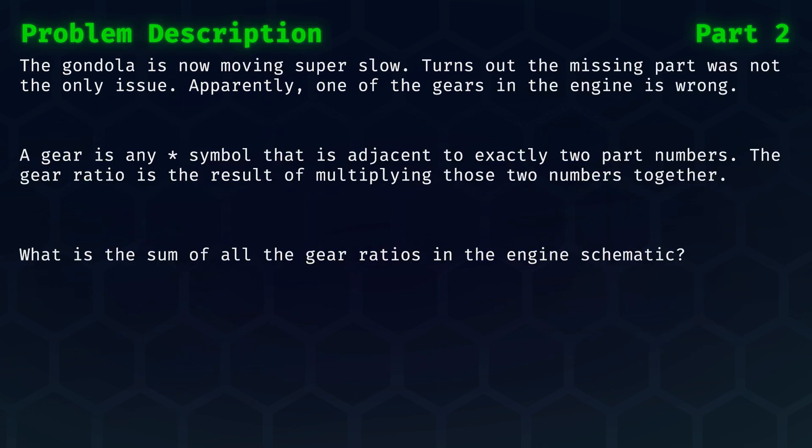For part two, we discover that the gondola is now moving, but it does so super slowly. Turns out that the missing part was not the only issue. Apparently, one of the gears in the engine is wrong as well. A gear is any star symbol that is adjacent to exactly two part numbers in the grid. The gear ratio is the result of multiplying those two numbers together. So given the same input as for part one, what is the sum of all the gear ratios in the engine schematic?